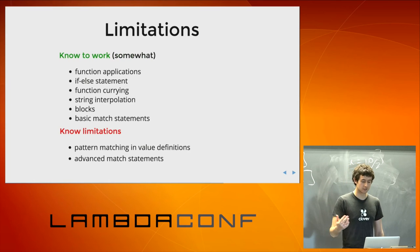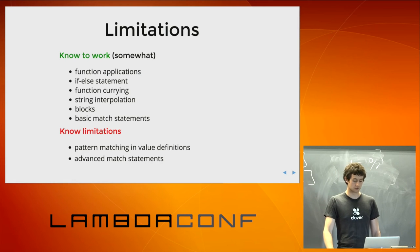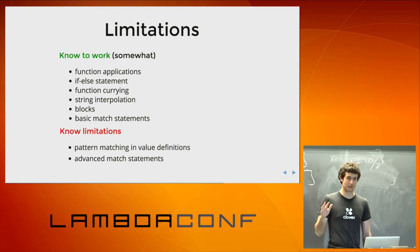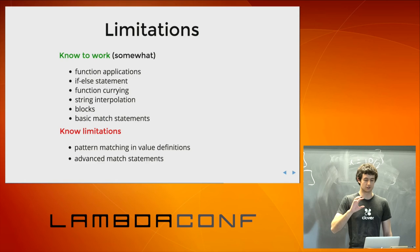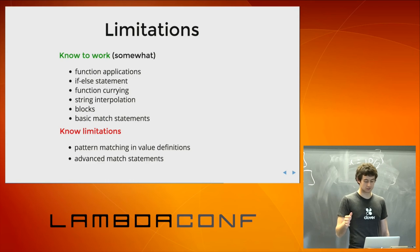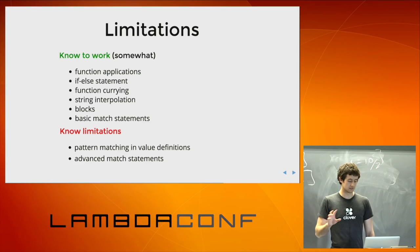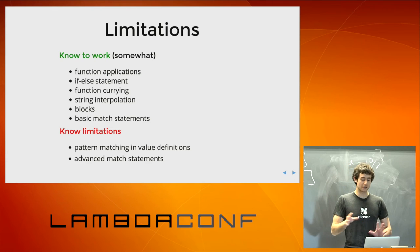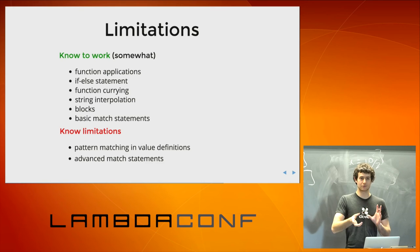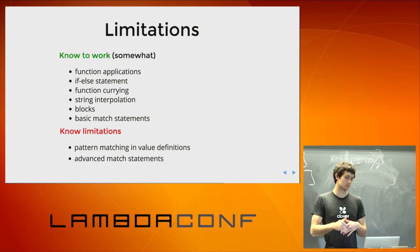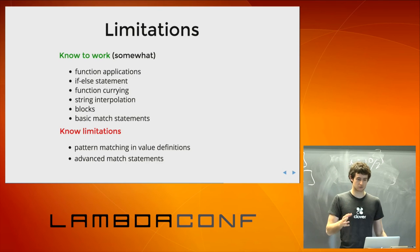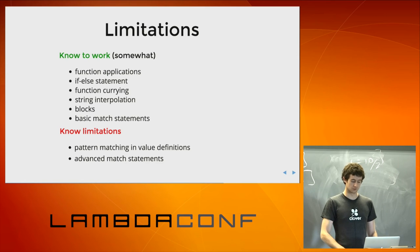In terms of my own project, what are some known limitations and things known to work? I have a pretty extensive test suite — this is a really fun project to test actually. You can write ScalaCheck properties that are really generic. Function application is known to work pretty well, if-else statements, function currying surprisingly enough, string interpolation, blocks, and basic match statements. Where it starts to break down currently is in pattern matching within value definitions, because that's sugar the Scala compiler transforms into a match statement, and complicated match statements tend to not work all the time — just because I haven't had the time, and also because Scala macros in their current form are a little hard to reason about.